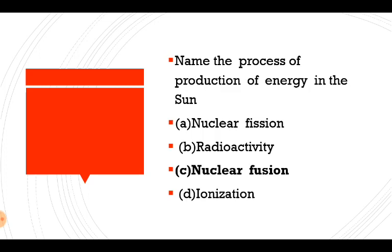Name the process of energy production in the sun. Option C is nuclear fusion. Nuclear fusion involves two light nuclei combining to release energy. Two hydrogen atoms combine to form a helium atom — this energy production is called nuclear fusion.